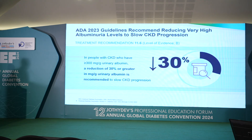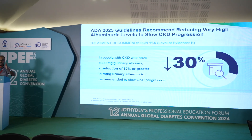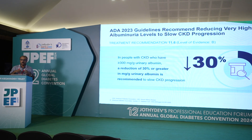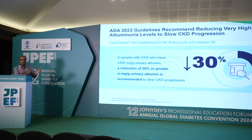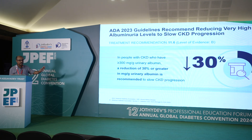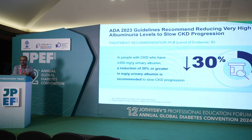Previously, under older ADA guidelines, we used UACR once or twice — diagnosing elevation if positive 2 out of 3 times — and then left it there. But from 2023, the ADA recommends that if your UACR is more than 300 mg/g, you should aim to reduce UACR by at least 30% or greater to reduce the progression of chronic kidney disease. It is now important to measure UACR repeatedly to monitor whether therapies are working.